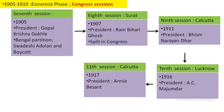The next session is in 1907, which is also very important. The 1906 session was presided over by Dadabhai Naoroji, but I have not included it here — I have included only the most important sessions. The 1907 session is important because we will see the split in Congress.